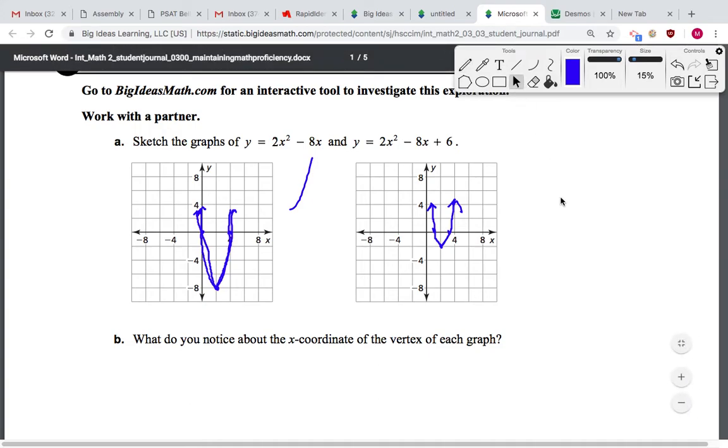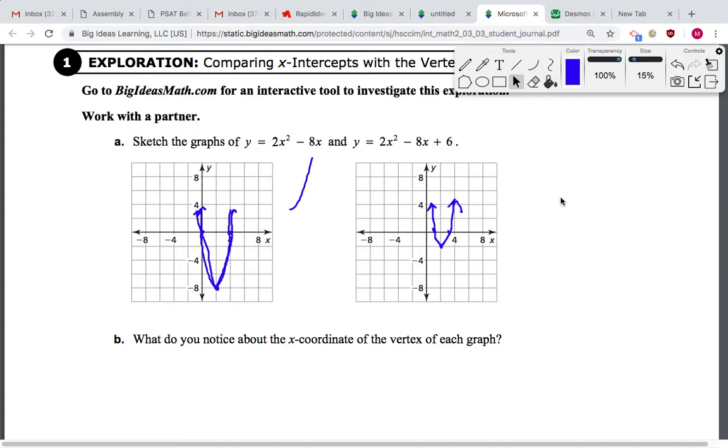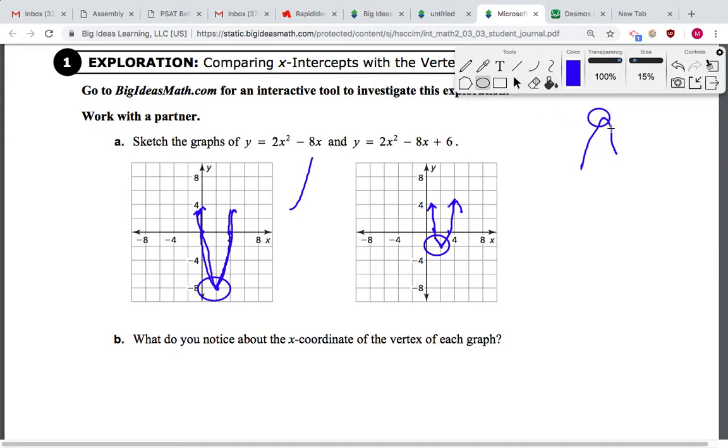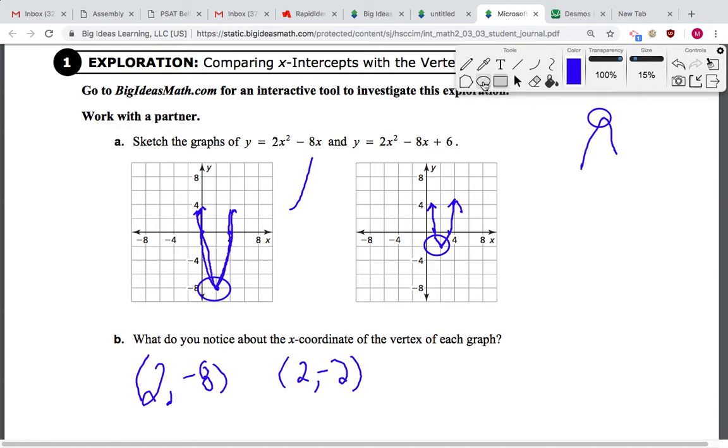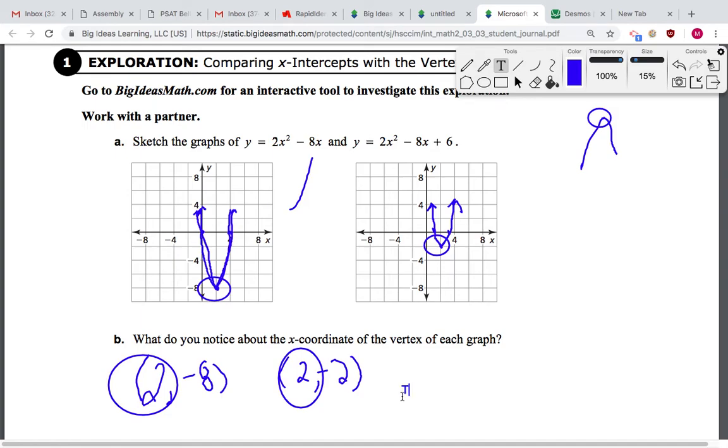The next question says, what do you notice about the x coordinate of the vertex of each graph? So before we can find the x coordinate, we have to find the vertex first. So the vertex is here. As a reminder, the vertex is the lowest or the highest point in a graph. So that's the vertex. These are the lowest points. Now, what are the vertices? This is 2, negative 8. And this is 2, negative 2. And what do you guys notice about the x coordinates? They are both 2. They are the same. So you would write something like that down. The x coordinates of both vertices are the same.